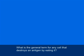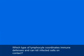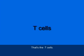What is the general term for any cell that destroys an antigen by eating it? That's the phagocyte. Which type of lymphocyte coordinates immune defenses and can kill infected cells on contact? That's the T-cells.